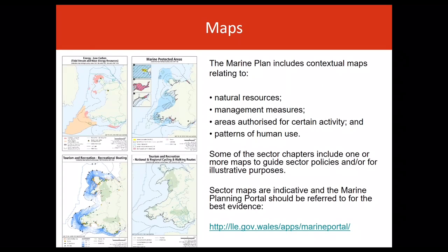The Marine Plan includes a range of maps showing natural resources, management measures, areas authorised for certain activity and patterns of human use. Some of the sector chapters include one or more maps to guide sector policies and/or for illustrative purposes. Given the changing nature of patterns of use and natural resources, all maps in the plan are indicative and liable to change. Decisions should always be taken in line with best available evidence, and users should refer to current sector maps and other relevant spatial information available on the Marine Planning Portal.